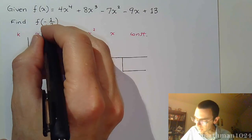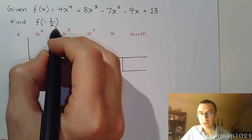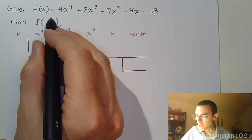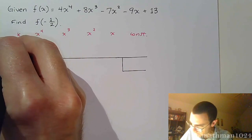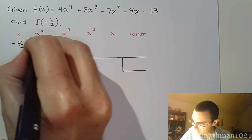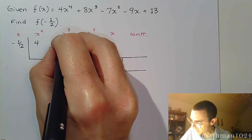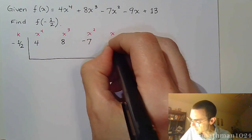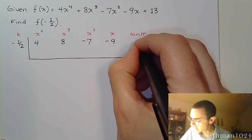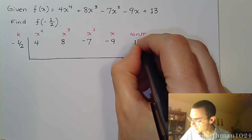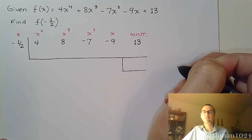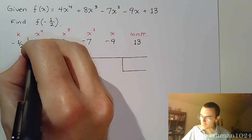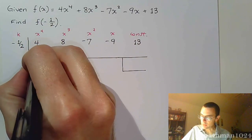My k value is exactly what you see. When you're doing remainder theorem, and you're trying to evaluate, that is your k value. So, that's negative 1 half. I've got 4x^4 + 8x^3 - 7x^2 - 9x and positive 13. Alright, first step. Bring down the 4.